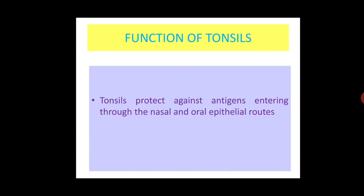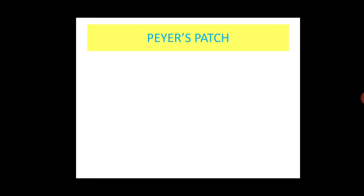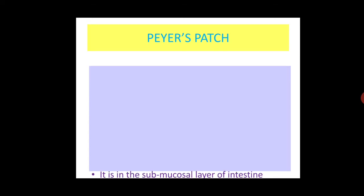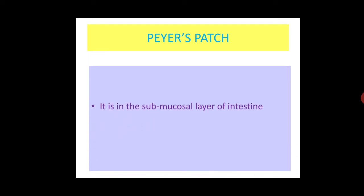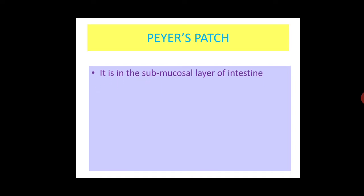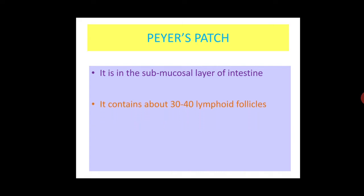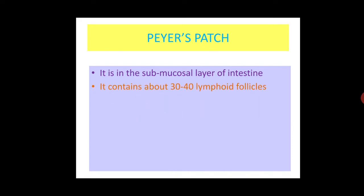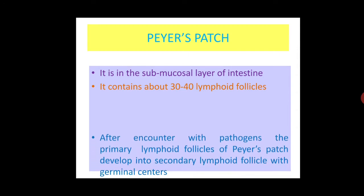This is a cross-section of palatine tonsil in which these blue dots are lymphoid follicles. The function of the tonsil is to protect against antigens entering through the nasal and oral epithelial routes. Peyer's patches are another example of organized mucosal lymphoid tissue, located in the submucosal layer of the intestine, containing about 30 to 40 lymphoid follicles.